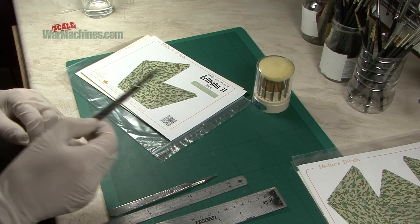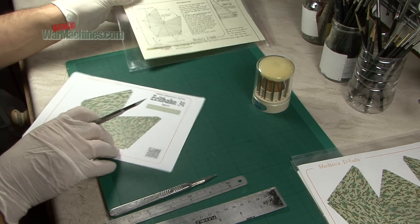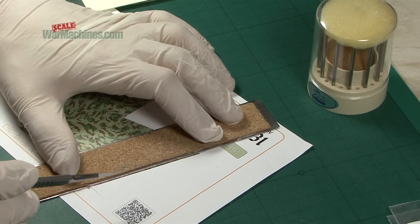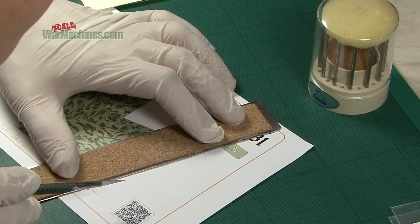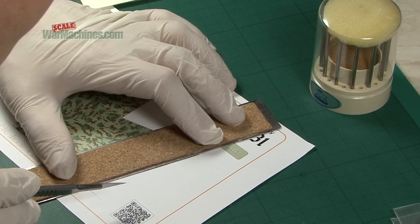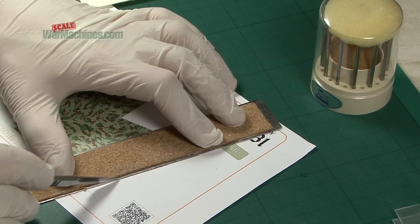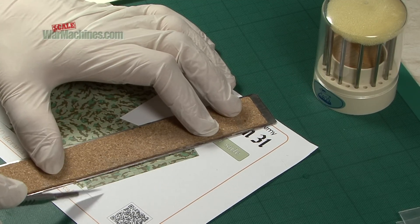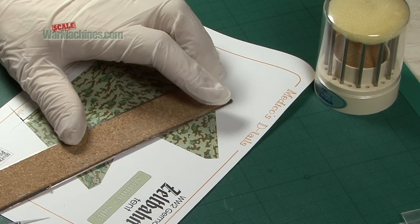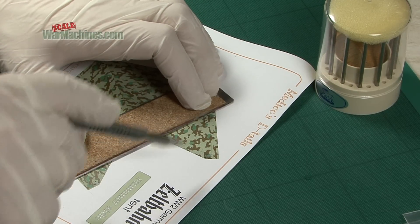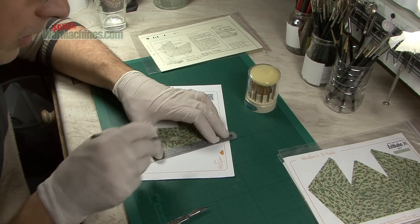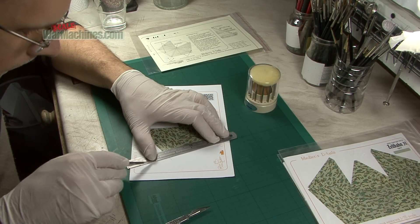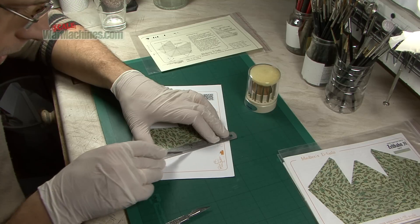Taking our sharp scalpel and our cutting mat we're going to follow the instructions and cut out the zelt barn. Make sure you cut carefully along the line. We're just going to work our way around until we've cut the entire piece out. Just run the blade gently to get the cut several times. Don't force it too much or it might snag and rip.